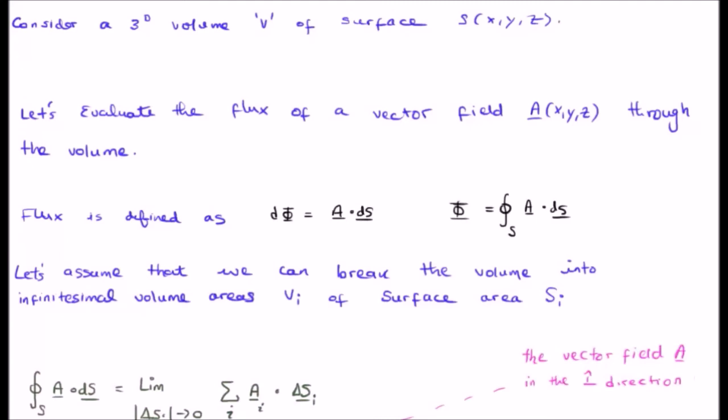It's the flow of the field through your volume. And the dot product picks out the component of your vector field which is perpendicular to your surface. In other words, that's the component which will flow through it, because obviously if the component is parallel to your surface, then there would be no flow or flux through it. So the component has to be perpendicular.